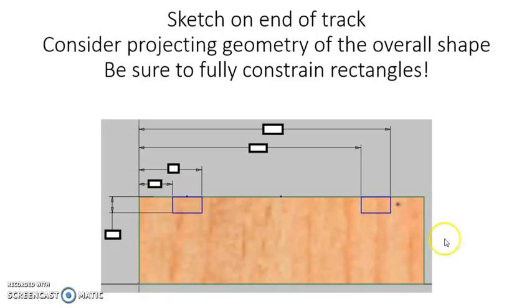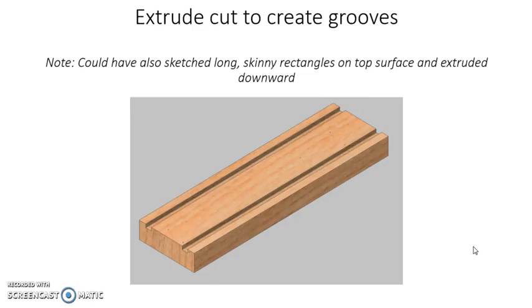and lots of equal constraints. And I used a few dimensions, like you can see here, to get the placement and the shape and the size of the rectangles to be correct. Just make sure they're fully constrained. When you get to that point, then it's a matter of a simple extrude cut to create those grooves on top of the straight track.